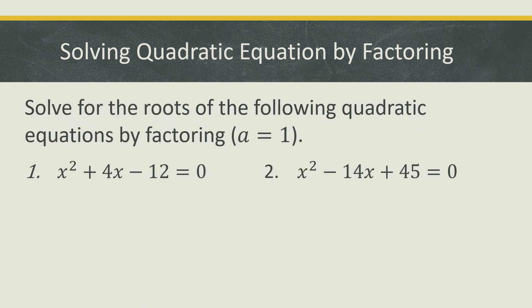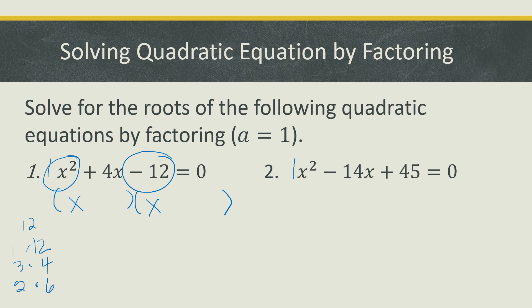The other type of quadratic equation that can be solved by factoring is a general trinomial. Let's start with a = 1. We factor the first term x² as x times x, and then list the factors of the third term, 12: 1×12, 3×4, and 2×6. Since the third term is negative, we need factors of 12 that when subtracted give us the middle term, positive 4. The factors 2 and 6 work best for obtaining that middle term.